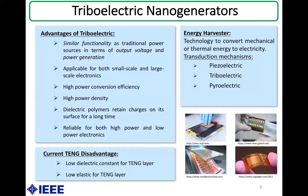Energy harvesters take advantage of ambient mechanical and thermal energy and utilize different transduction mechanisms to generate electricity. They are a promising flexible power source for future electronics. There are three types of energy harvesters based on different transduction mechanisms: piezoelectric, triboelectric, and pyroelectric. Among these, the triboelectric-based nanogenerator, also called TENG, is desired due to its high power conversion efficiency, high power density, low cost, and high reliability for both high power and low power electronics.